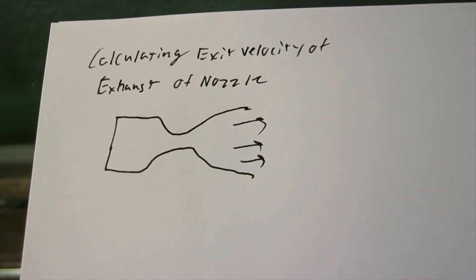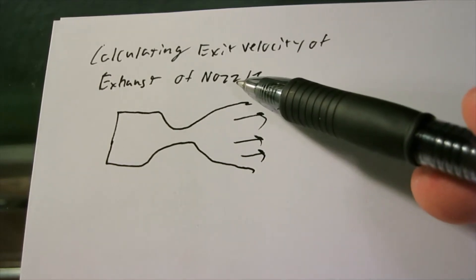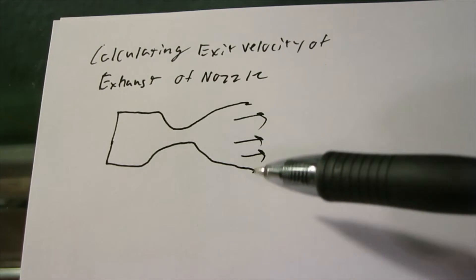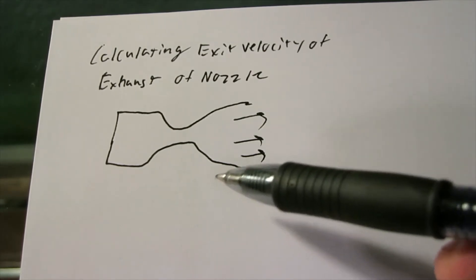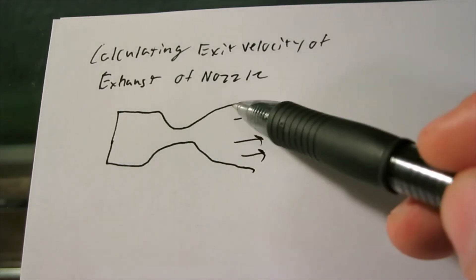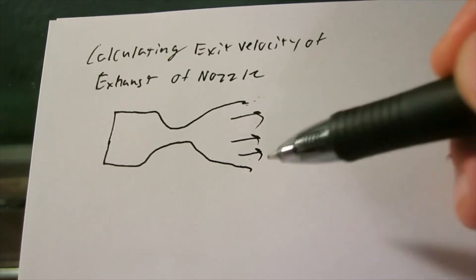Hello, in this video we're going to be talking about how to calculate the exit velocity of the exhaust on a converging diverging nozzle, or a rocket engine nozzle. So this is just an example drawing, and we're going to calculate the velocity coming out the exit of the nozzle.